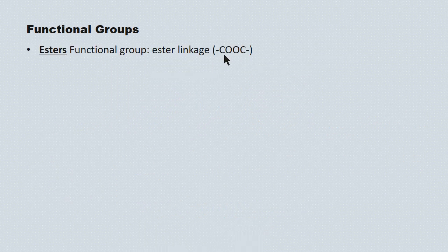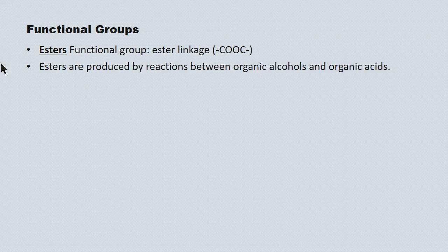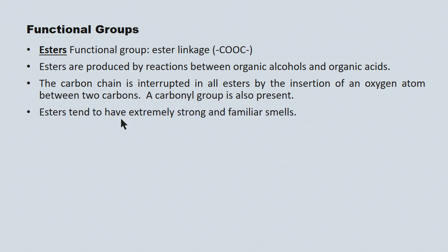Esters: their functional group is known as the ester linkage — a C with a carbonyl group, doubly bonded to an oxygen, and then a second oxygen that actually interrupts the carbon-to-carbon backbone. It's called an ester linkage, and it's what you look for when identifying an ester. Esters are included in this unit because they're the product of a reaction between an organic acid and an organic alcohol. The carbon chain is interrupted in all esters by an oxygen atom, and there's also a carbonyl group present. Esters tend to have extremely strong and familiar smells, from fresh flowers to fruits to skunks — all those smells derive from the presence of an ester.